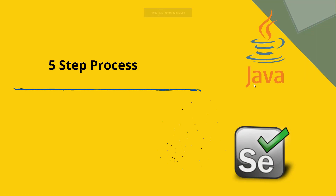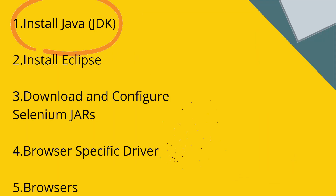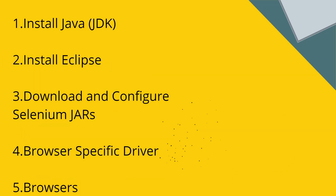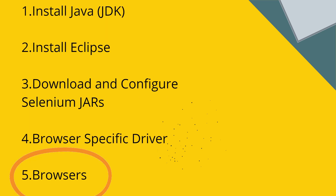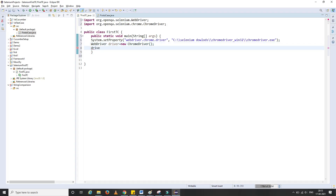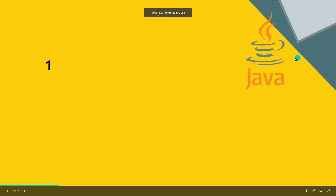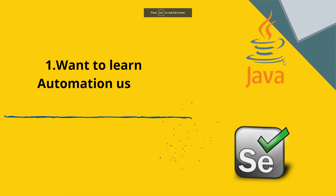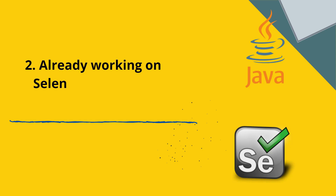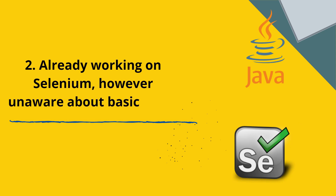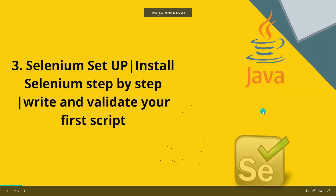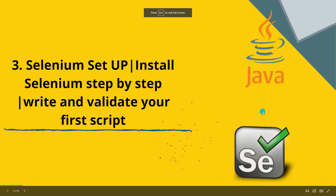In this video we'll talk about how a complete absolute beginner to Selenium can set up Selenium on their machine, following a step-by-step process. We'll also see how to write and validate your first simple test case. This video is going to help you if you are willing to learn automation, are new to it, or are already working on a Selenium project but don't understand how the basic setup is done.